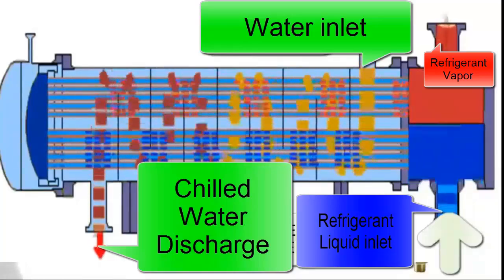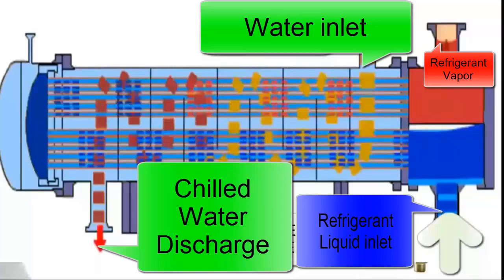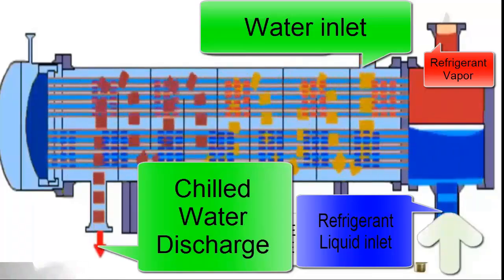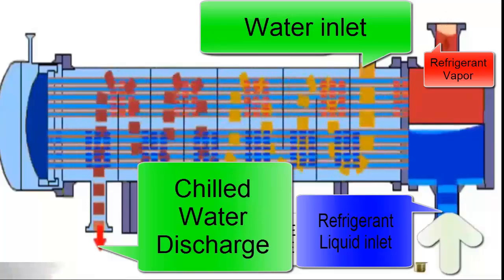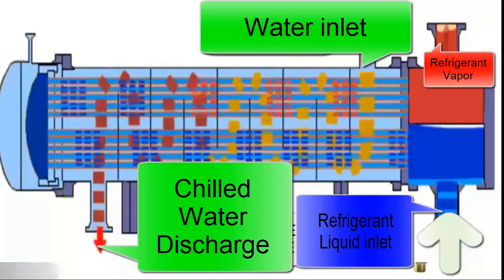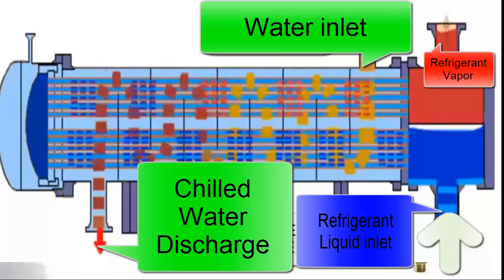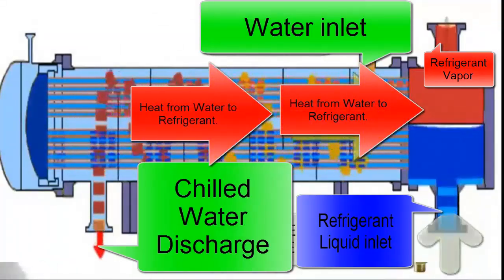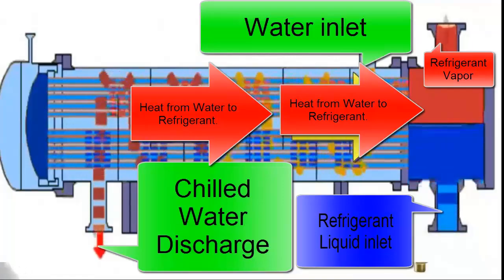It is important to note that, although the water and refrigerant share the evaporator, there is no direct contact between them as they circulate through separate pipes. This is crucial to avoid cross-contamination and maintain the system's efficiency, ensuring the cooling process is safe and effective.